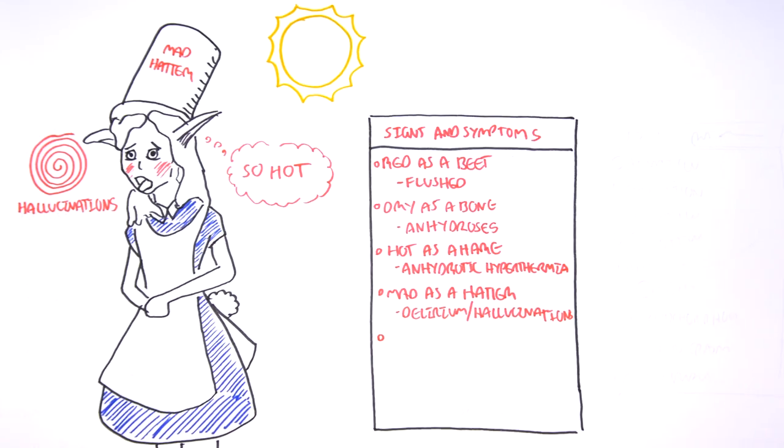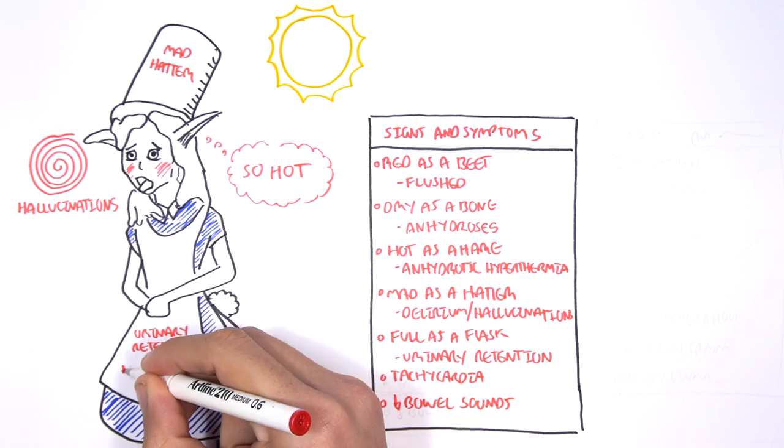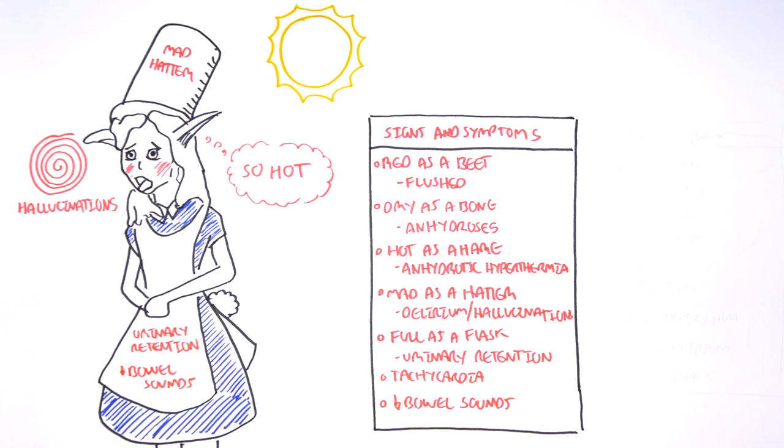Full as a flask, this is urinary retention. And other signs and symptoms include tachycardia and decreased or no bowel sounds.